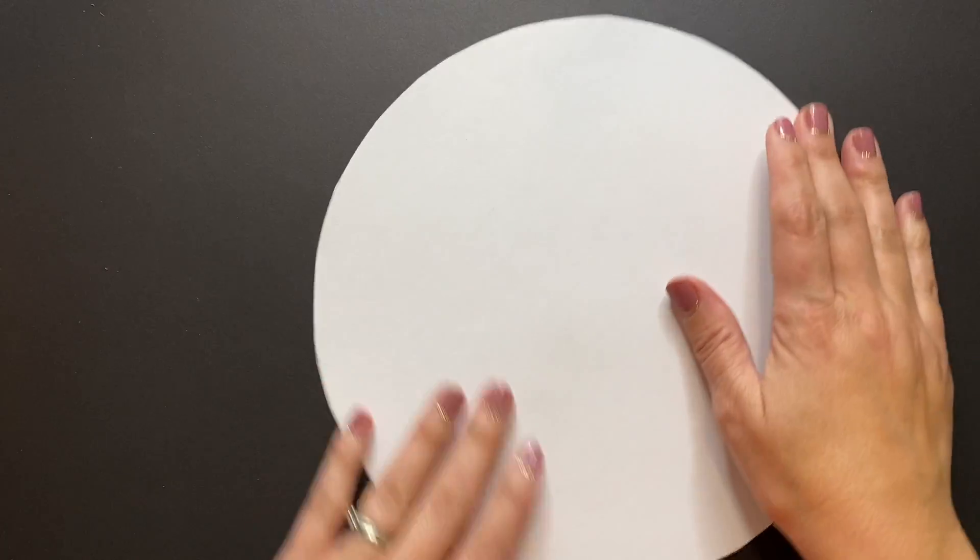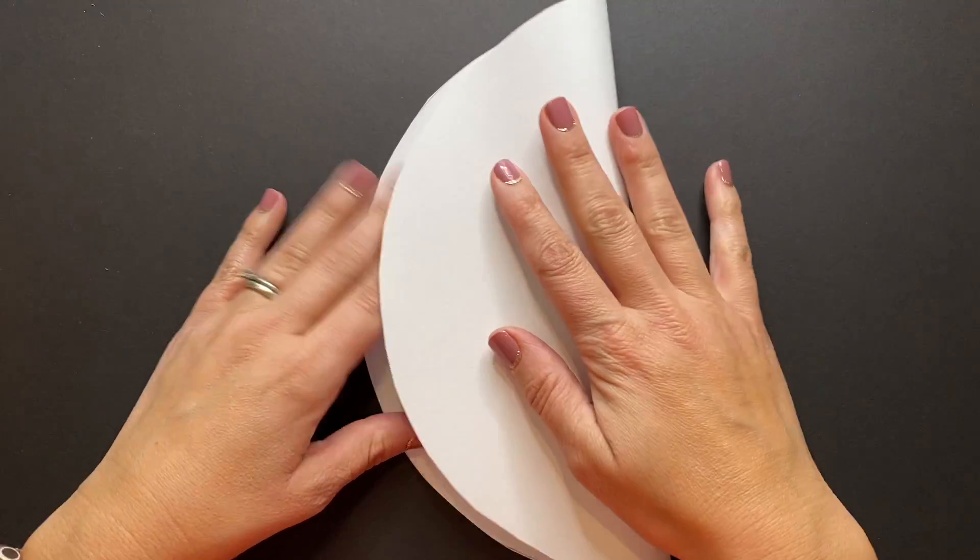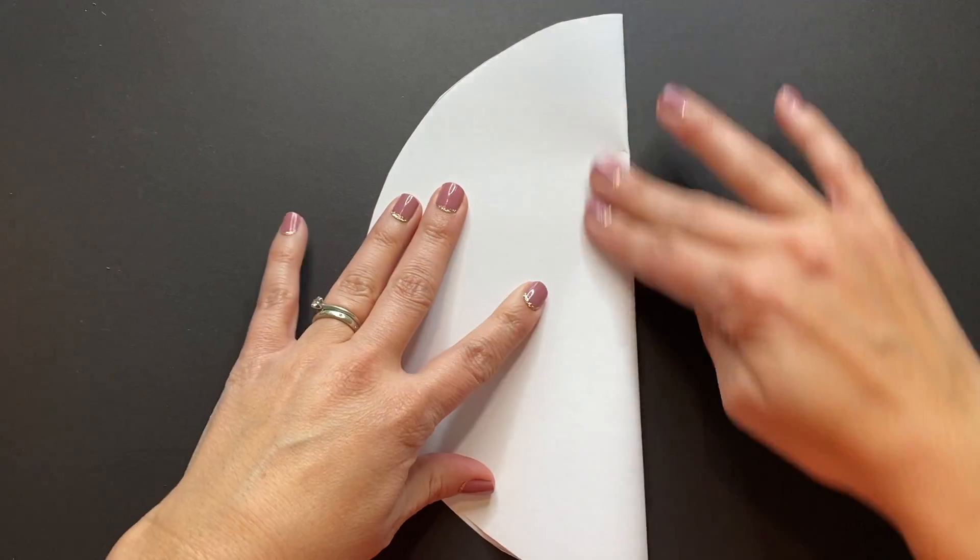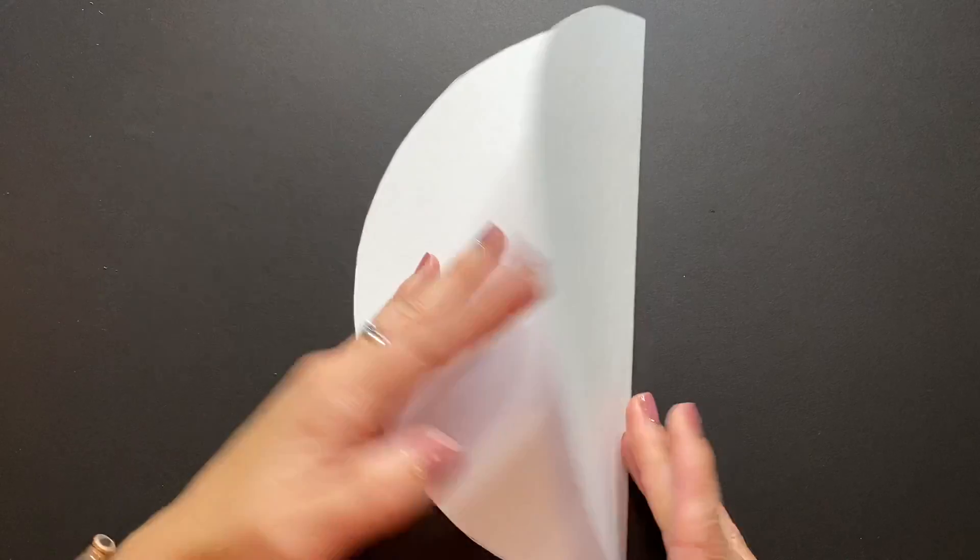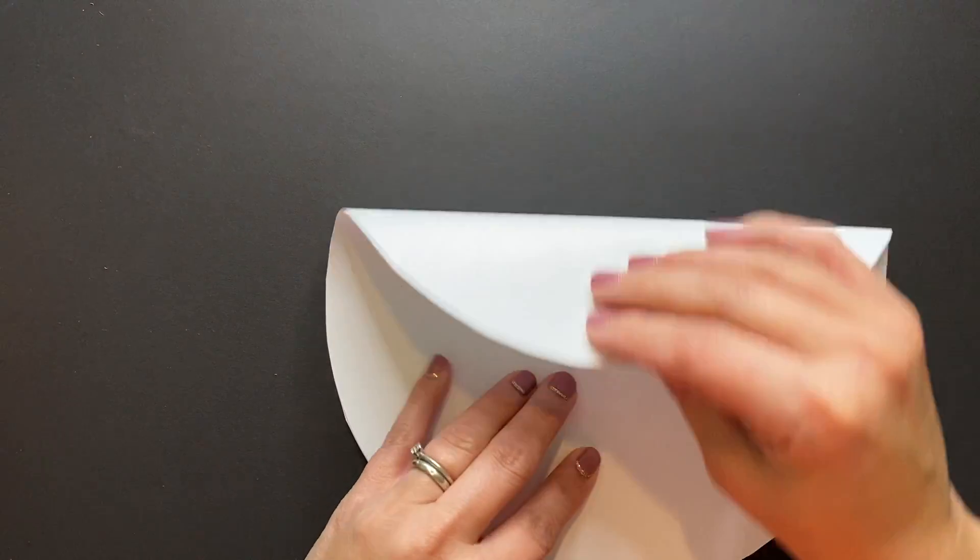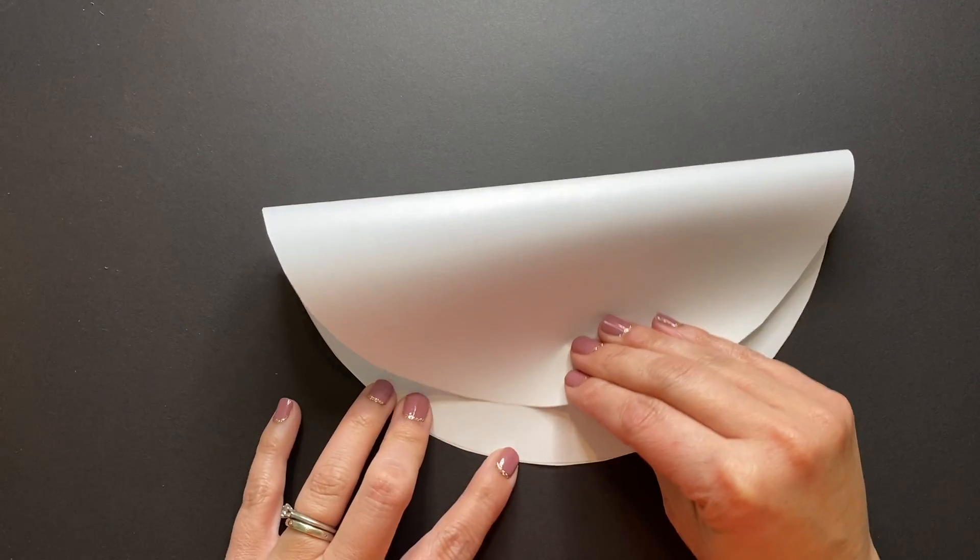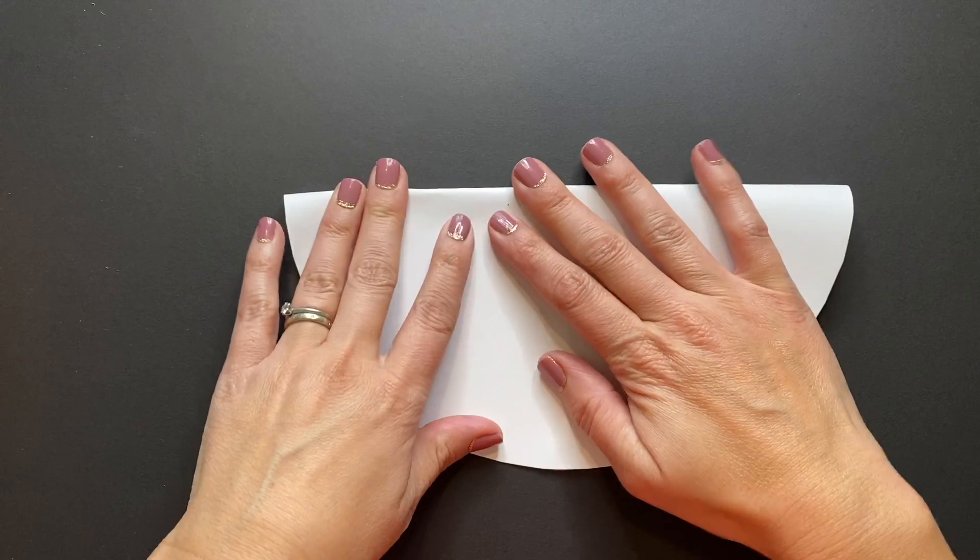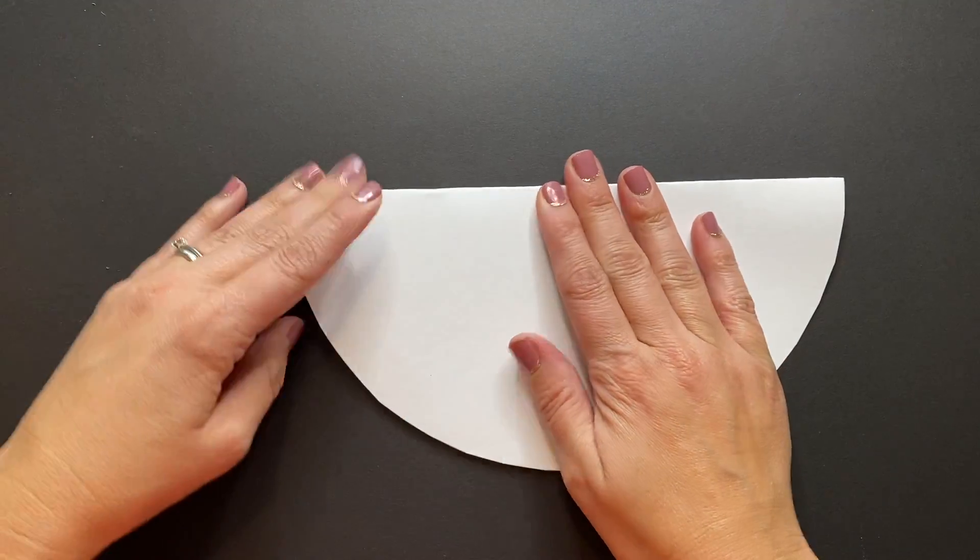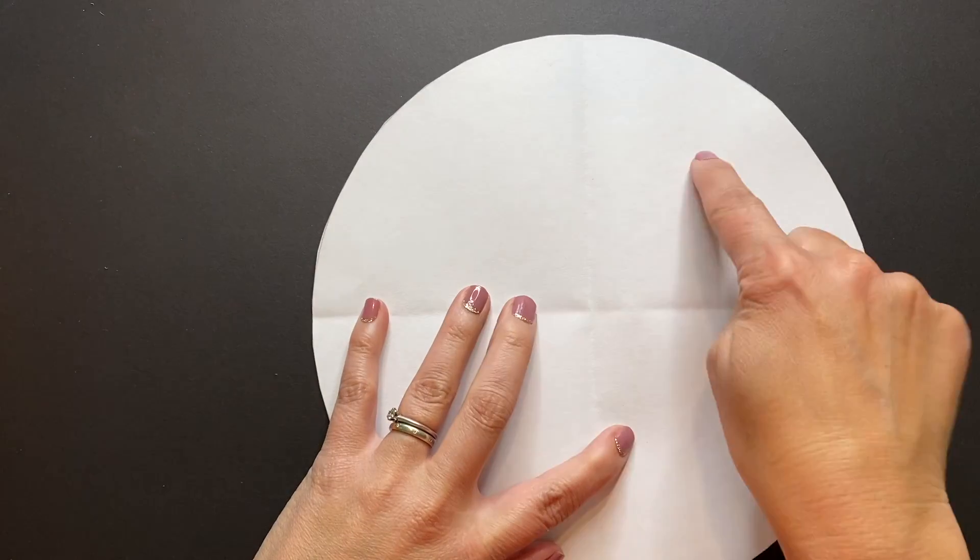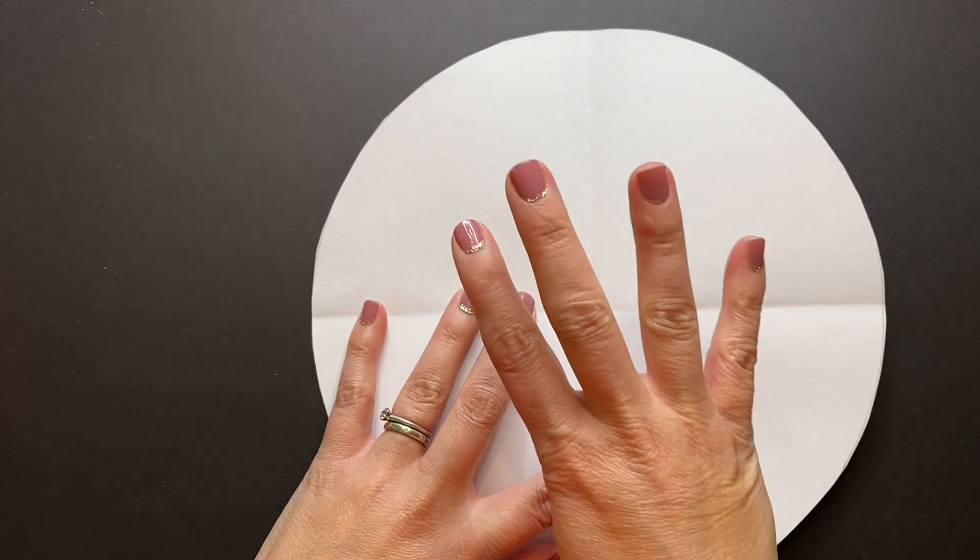Think of it as a pizza or a pie where each slice is the same. So fold it in half nicely. Now you're going to match up those two lines that you just folded and fold it the opposite way. So now we have four equal parts; we still need four more.